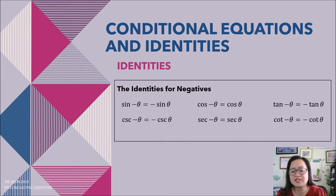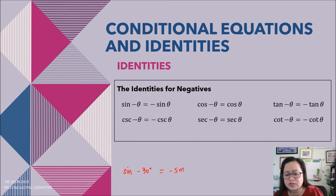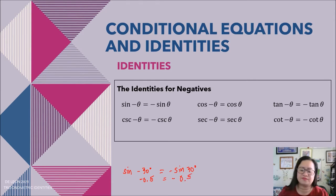Some examples of identities are the identities for negatives. If we have sine of a negative angle, that is equal to negative sine theta. You can explore this by replacing theta with any value. For example, sine of negative 30 degrees equals negative sine 30 degrees. Using our calculator — note it should be in degree mode — sine of negative 30 degrees is negative 0.5, and negative sine 30 degrees is also negative 0.5. So we can clearly see that the two expressions are equal.